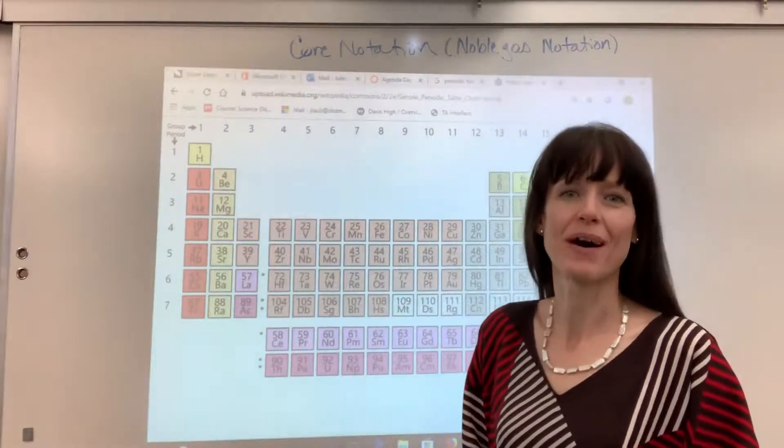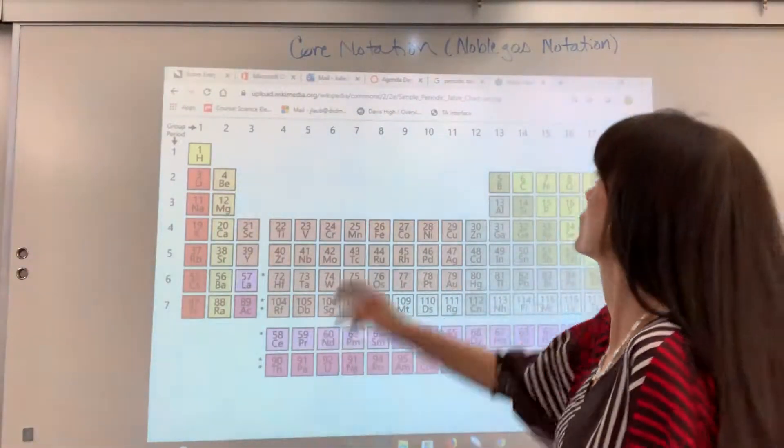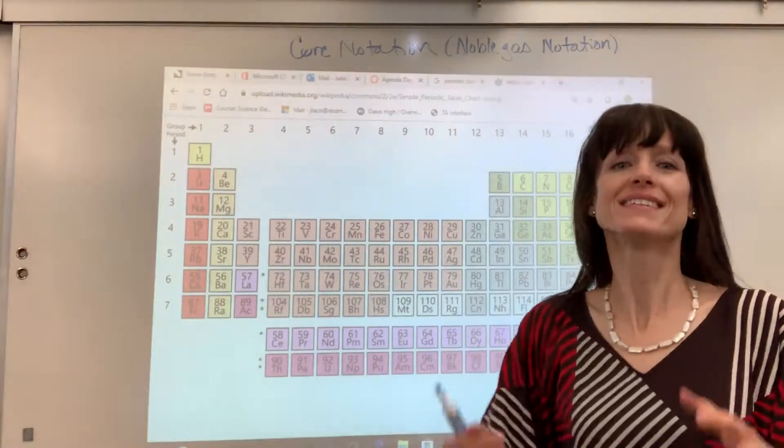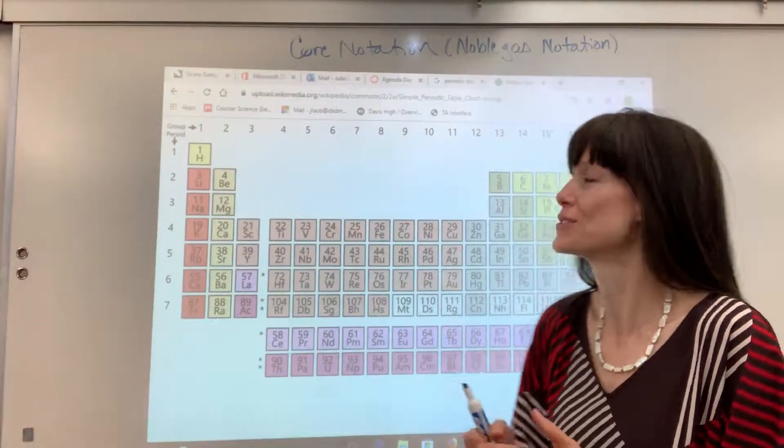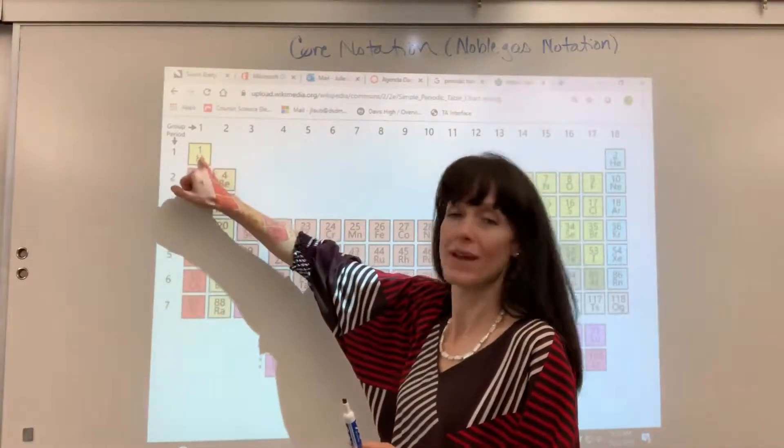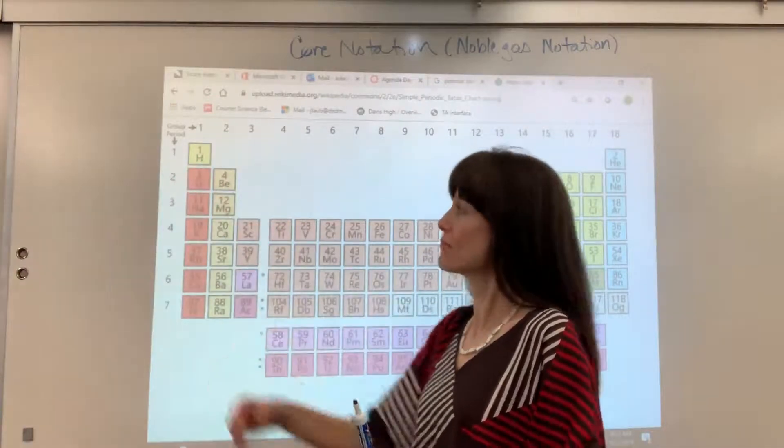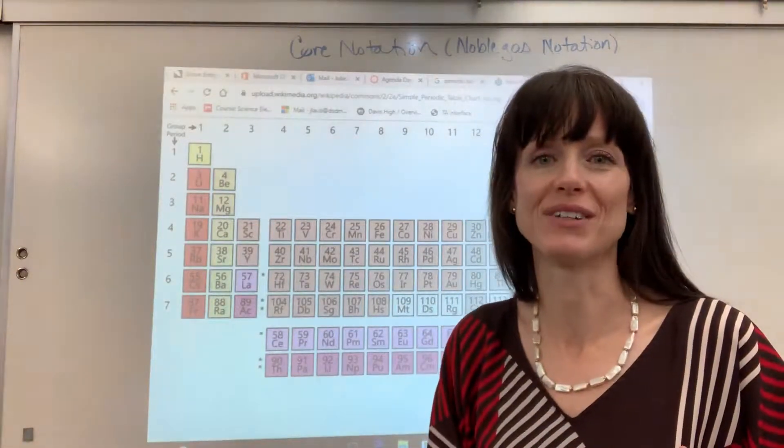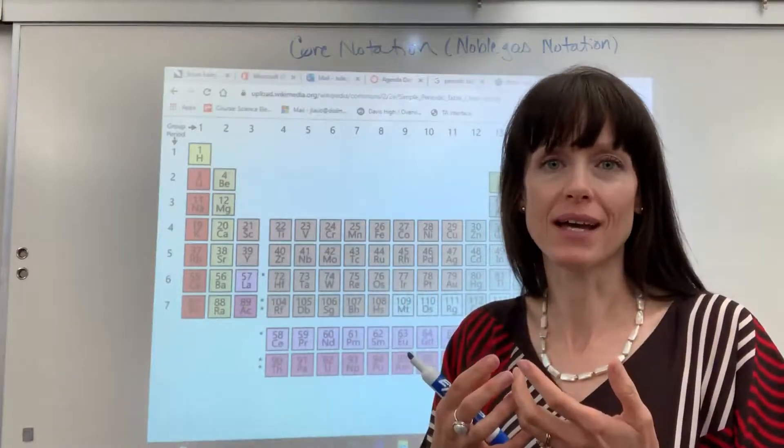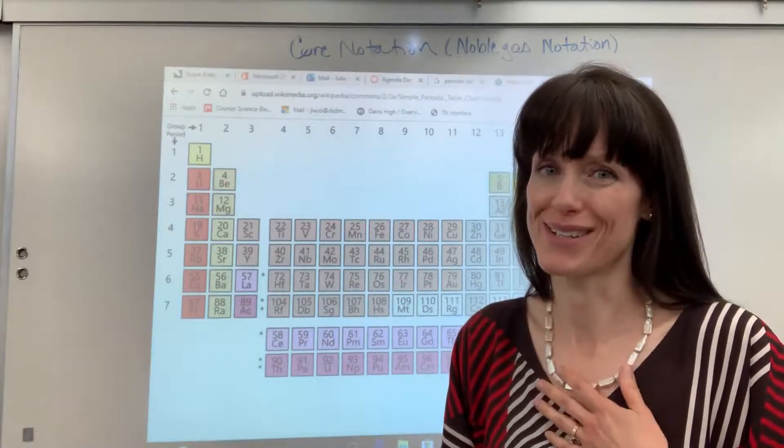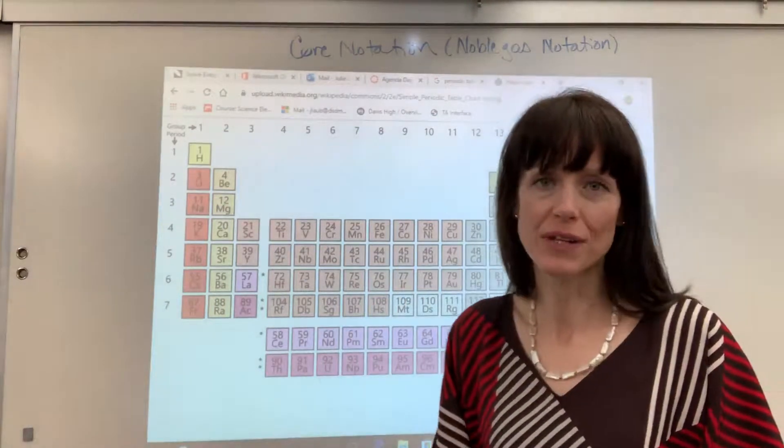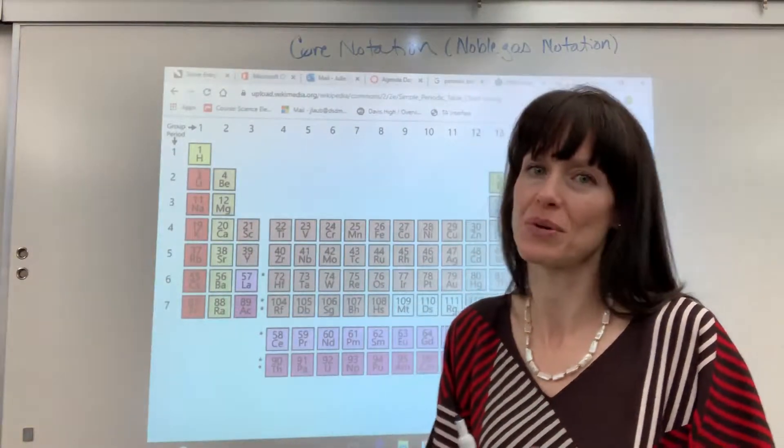Hi, we are going to talk about core notation. It's also called noble gas notation, and this is the shortcut so that you don't have to start at 1s2, hydrogen. Now, it still includes the hydrogen. It just embraces that in a way that it's a lot easier for you and I to write. So, electron configuration, the shortcut is called core notation, the abbreviation.